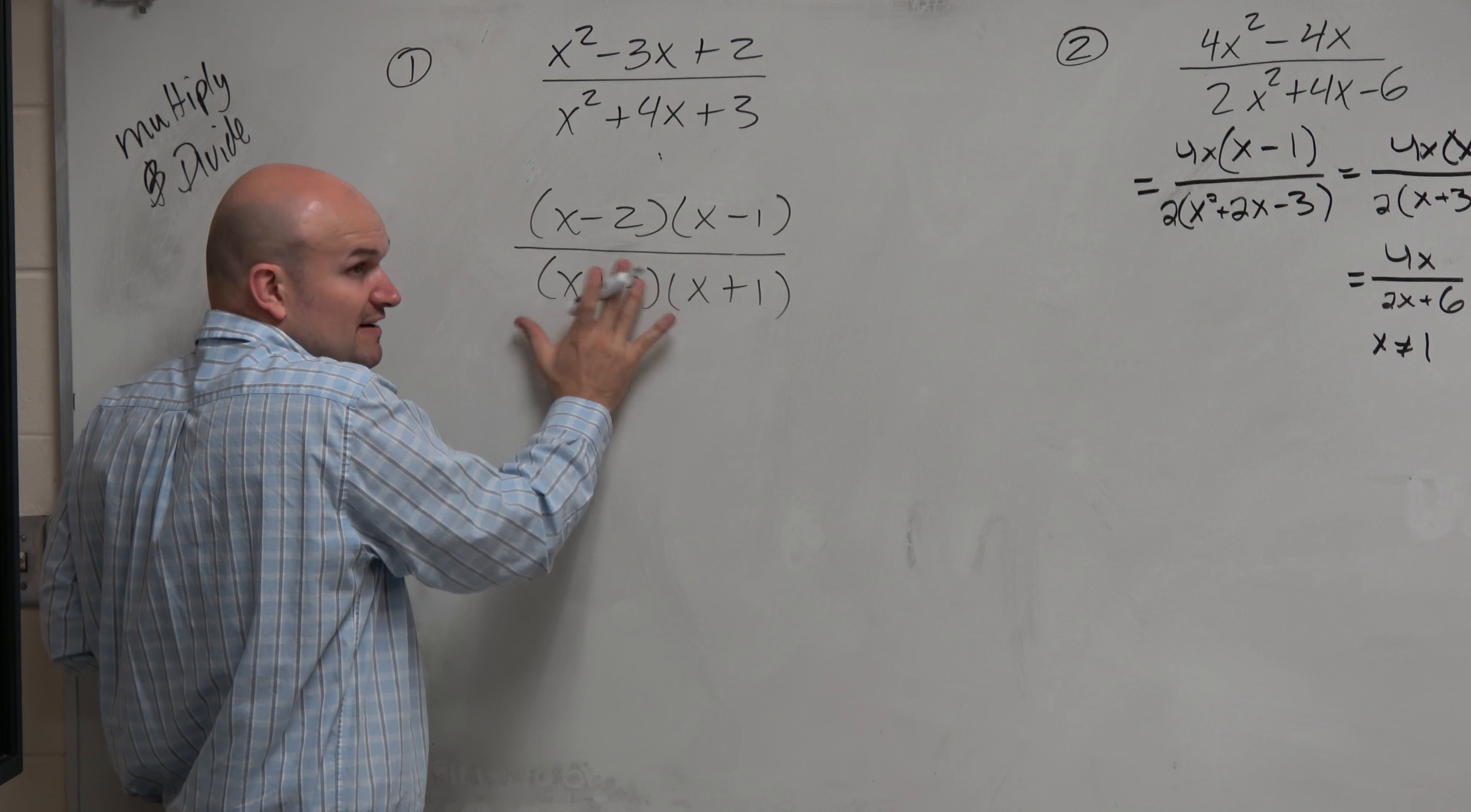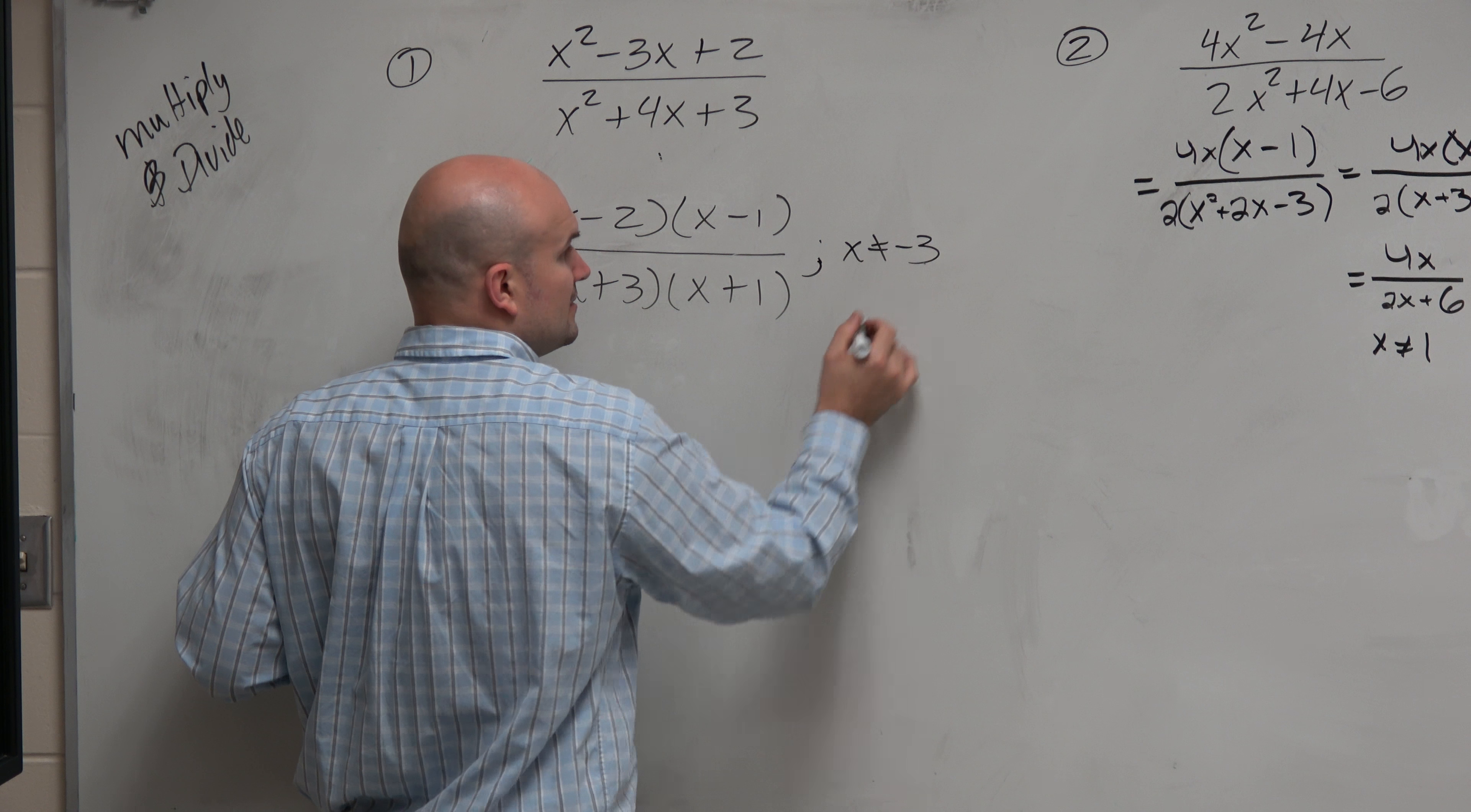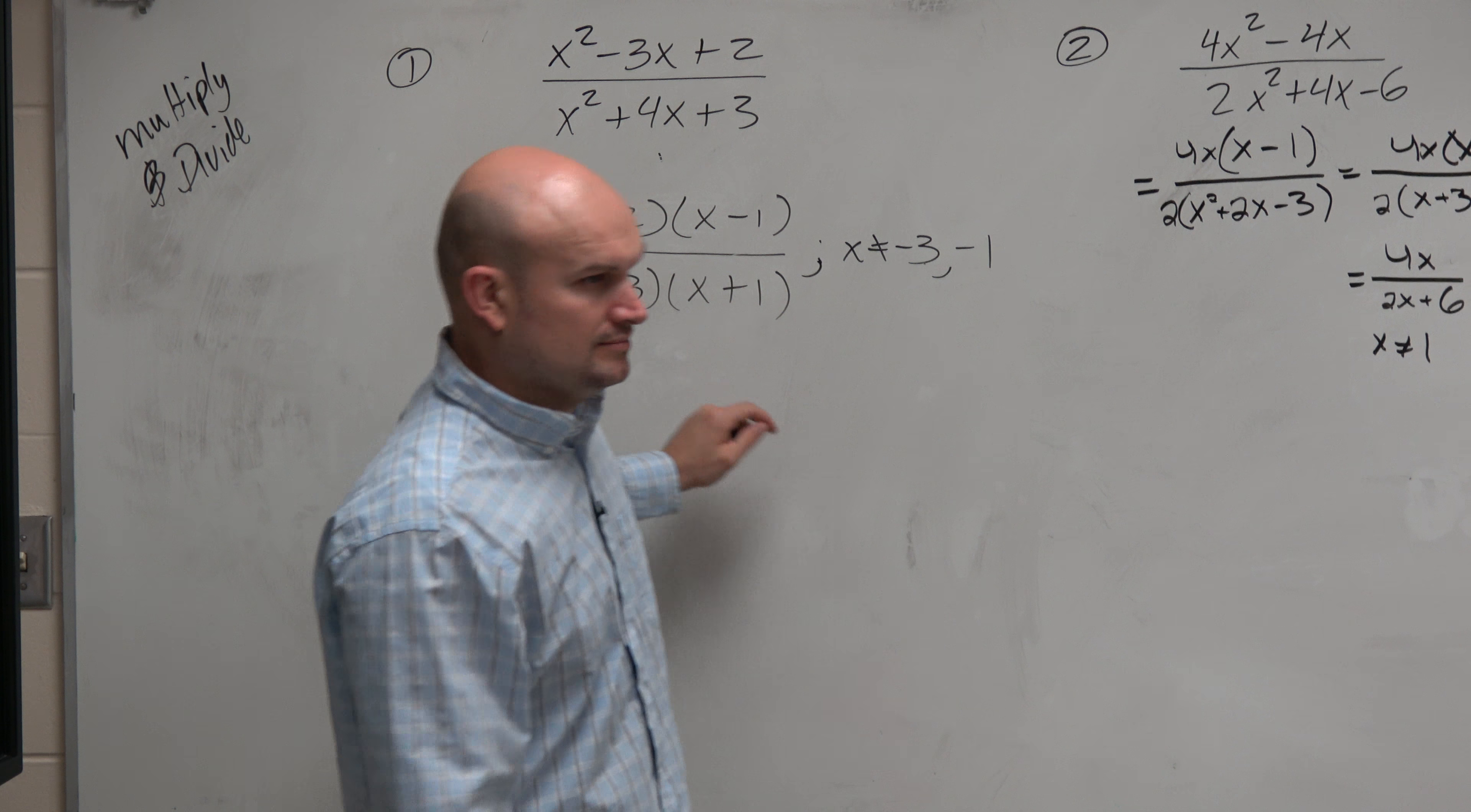No. Why not? Because the division property only works when terms are separated by multiplication. Like, if you had 4 plus 3 divided by 5 plus 3, you can't just say that's equal to 4 fifths, right? You can't just divide those out. You guys agree?